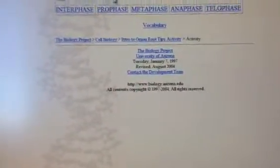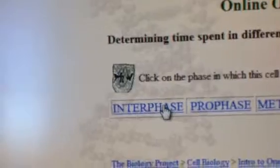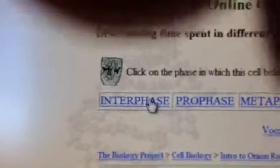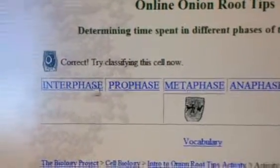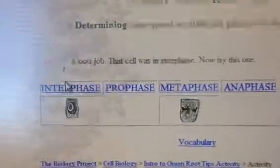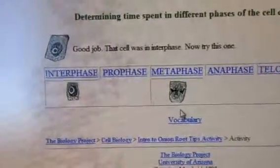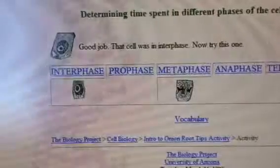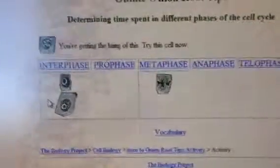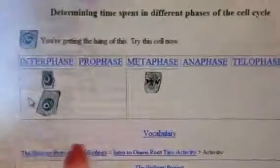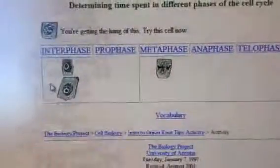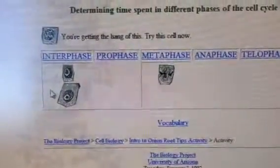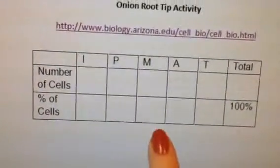It says click on the phase in which the cell belongs — look at the picture and decide what phase it is. For example, if you think it's metaphase, click metaphase; if you think it's interphase, click interphase. It places the cells into the boxes for you, so you don't have to count as you go. You'll click through several cells and it will build the count for each phase, then at the end you'll calculate the percentages from the total and enter your data.